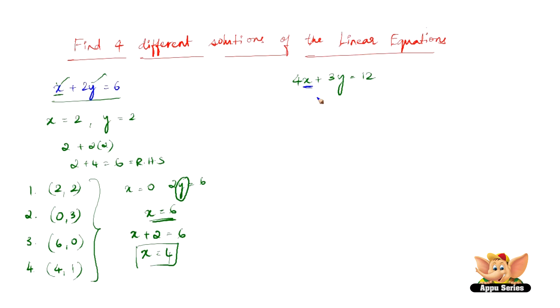If we substitute x as 0, we have 3y equals to 12 and we can clearly see that y should be equal to 4. So we have the first solution as 0 comma 4. So easy.